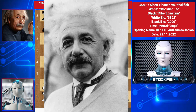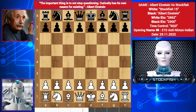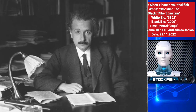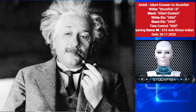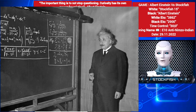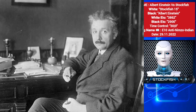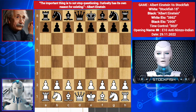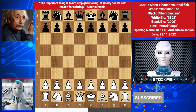Chess friends, Albert Einstein was a German-born theoretical physicist, widely acknowledged to be one of the greatest and most influential physicists of all time. Einstein is best known for developing the theory of relativity, but he also made important contributions to the development of the theory of quantum mechanics. His IQ was 164, around 2,900 Elo rating performance in chess.